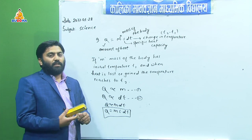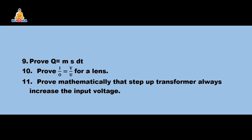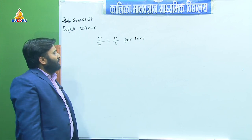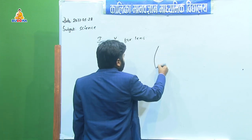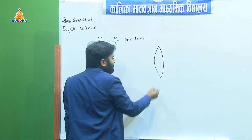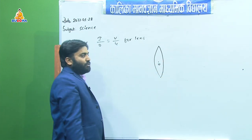Now let us go to the next equation — the tenth one. We have to prove that I/O = V/U for a lens. This is a very important relation. To prove this we have to draw the figure of the lens. Let us draw the principal axis.